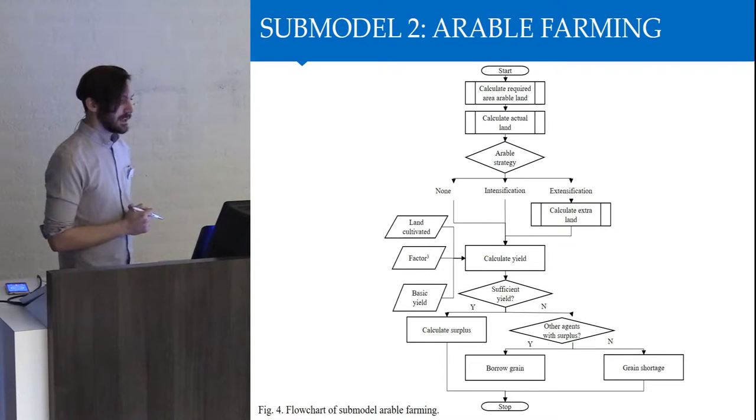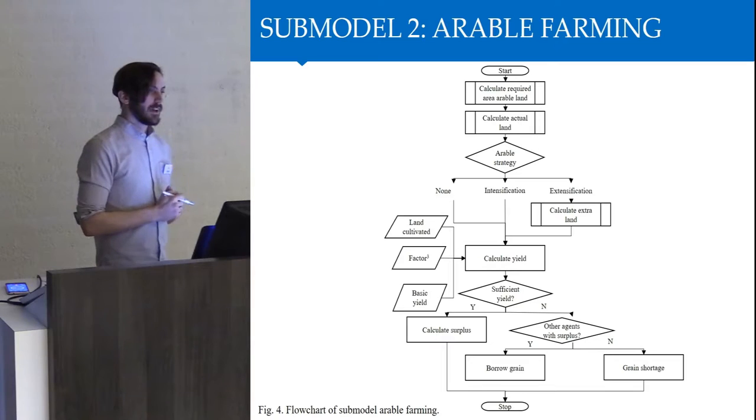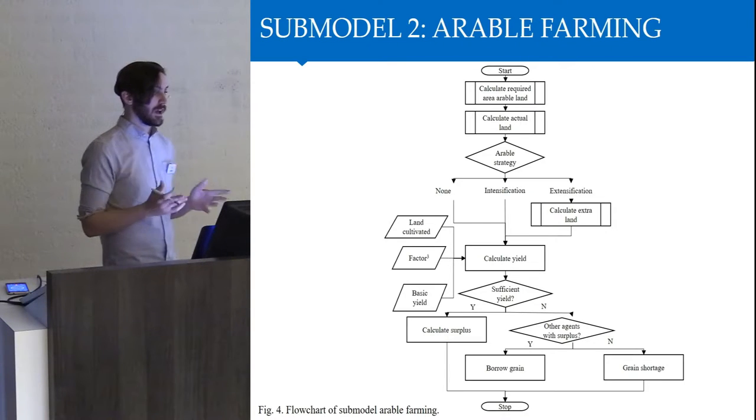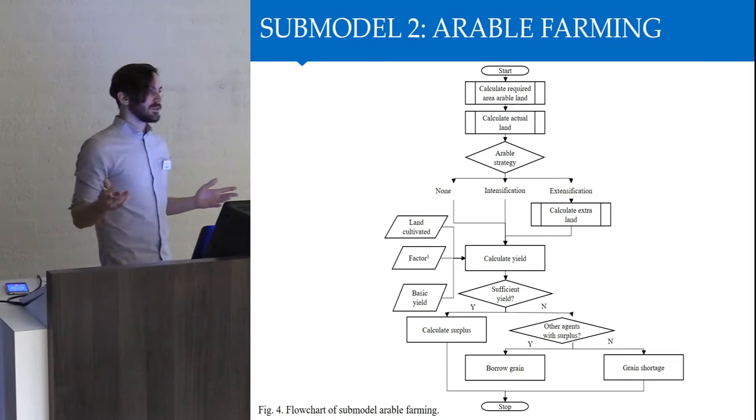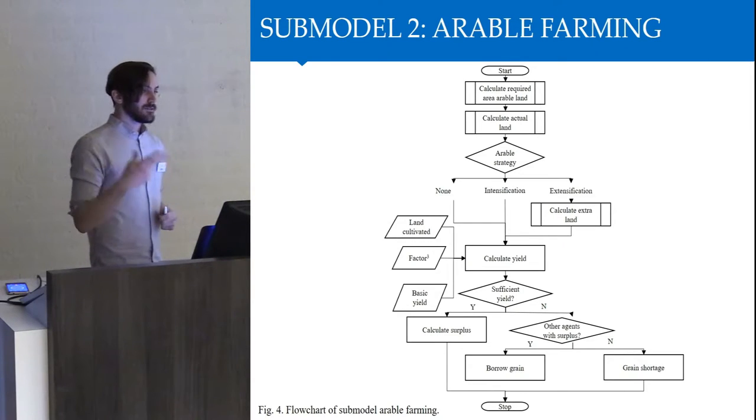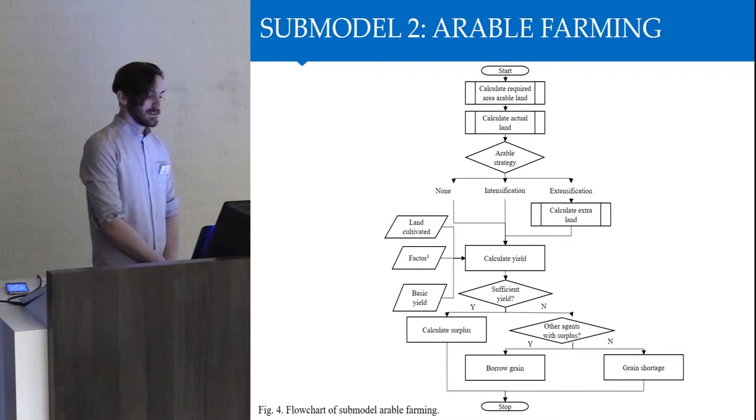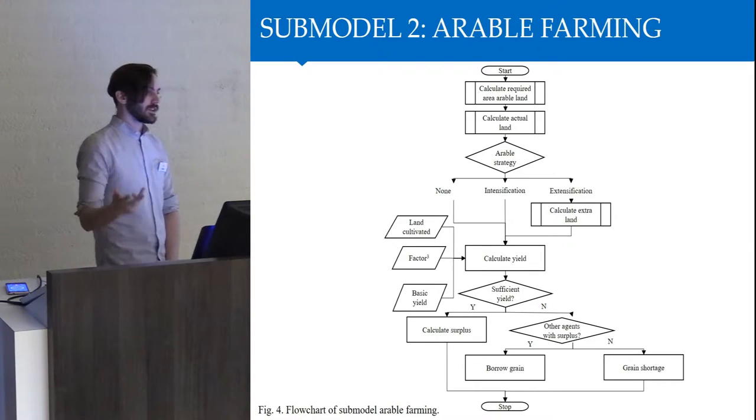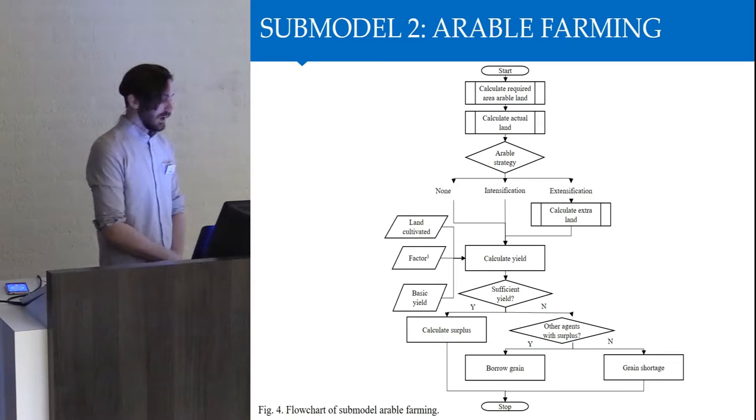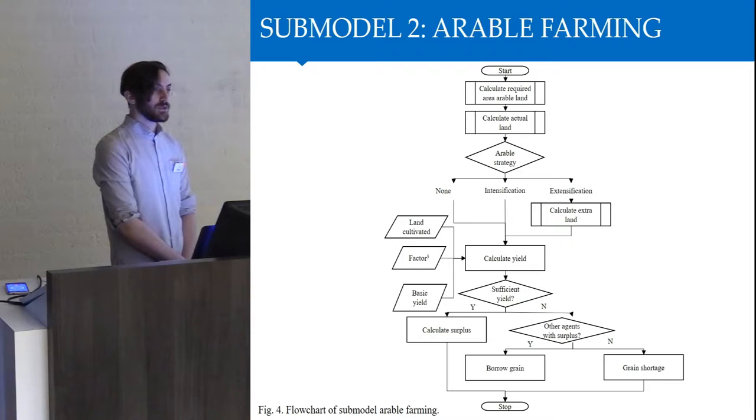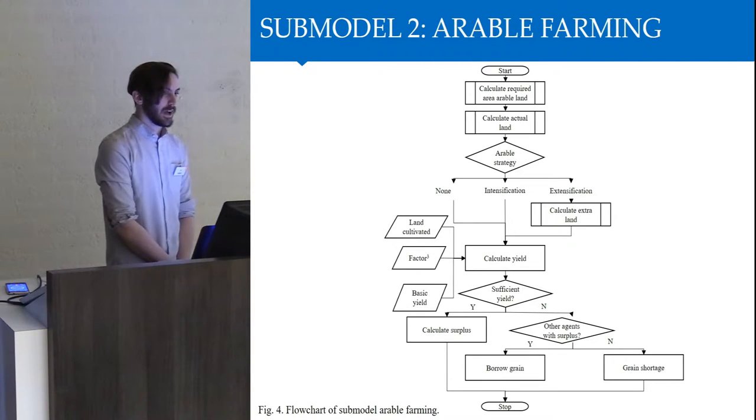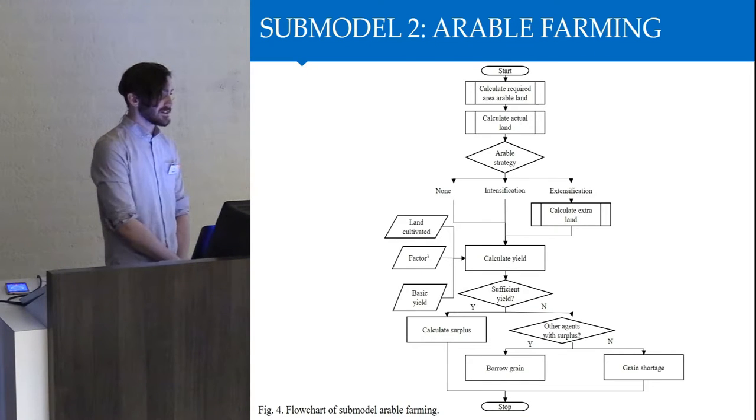The yield is calculated as the amount of land cultivated multiplied by the basic average yield, which is 1,000 kilograms per hectare. However, because of annual fluctuations in grain yield, this is further reduced or increased by a factor of 20%. So grain yield per year can fluctuate between 800 kilograms per hectare, which would be a bad year, and 1,200 kilograms per hectare, which would be a good year. Settlements will then decide whether they have sufficient yield to feed their families and to sow land for the next year. If they do, then the process is stopped. If not, they have the ability to borrow grain from other settlements, provided that other settlements also have surplus grain.